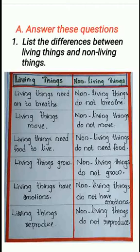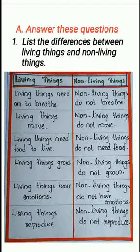Third, living things need food to live; non-living things do not need food. Living things grow, but non-living things do not grow. Living things have emotions; non-living things do not have emotions. And the sixth one, living things reproduce; non-living things do not reproduce.